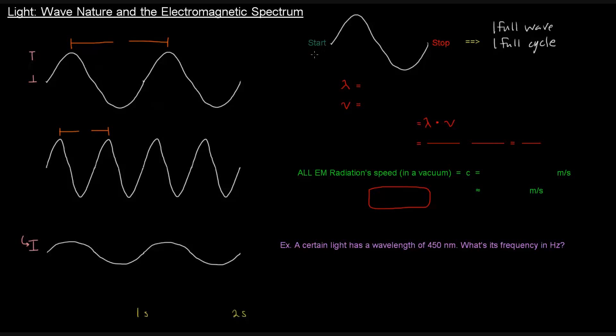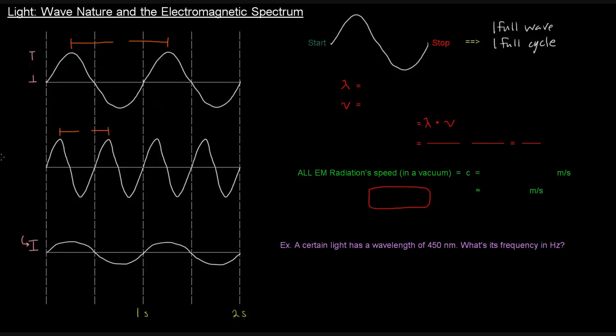So if I sort of split this up, we see this wave traveling up and then down and then back up to its starting point. It started here, it goes up, it comes down, and it gets back to the point where it's starting again to give another wave. So here, these are two full waves or two full cycles here.